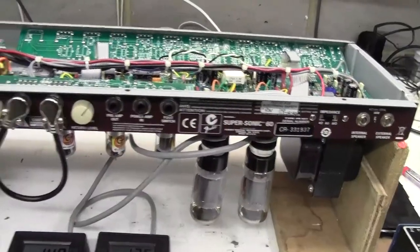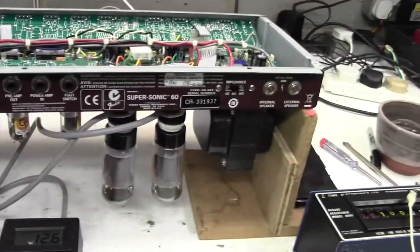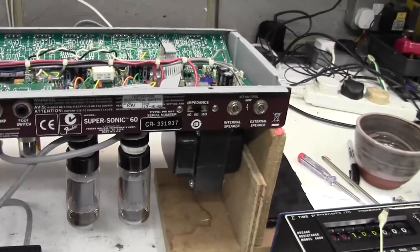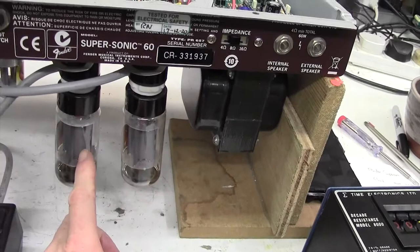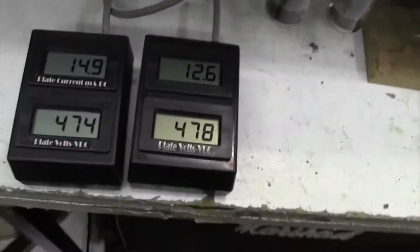So I'm going to take the chassis out, get it up on the bench, and then I'll rejoin you. I've got the chassis out now and up on the bench, so let me show you the setup that I'm going to use to measure the bias on this amplifier. Here are our output tubes. I have two bias meters,